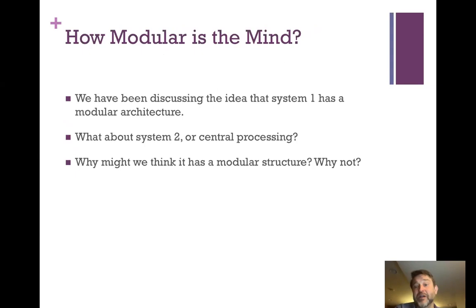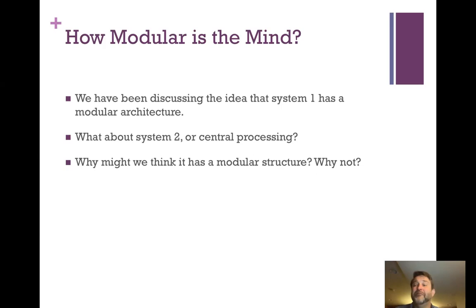I want to end with some questions for you to think about. The thought here is: how modular is the mind? So far we've been discussing the idea that System 1 has a modular architecture. But now I want you to think about — and I want us to discuss when we get together — what about System 2, or central processing? Why might we think it has a modular structure, or why not? I'm going to assign you to think about this in your group work, and then we'll talk about it more when we get together later in the week.